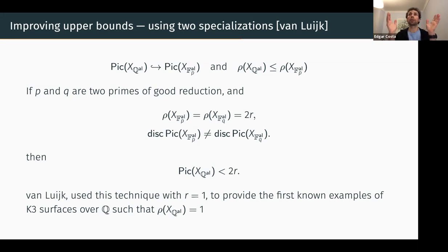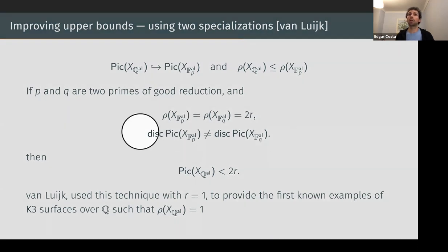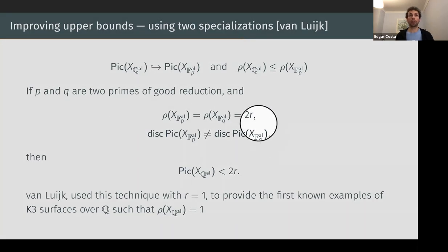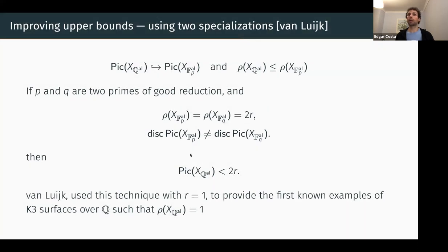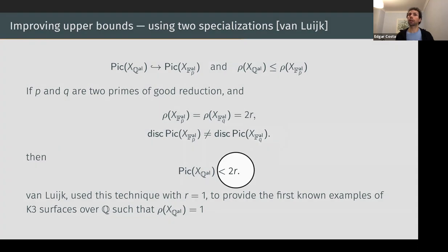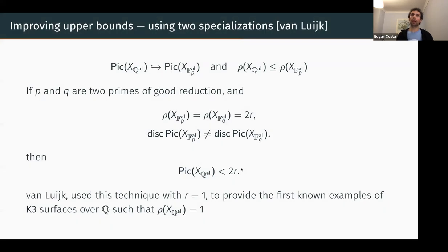The first ad hoc method, discovered maybe 13 years ago, is the idea of using two primes. You have your K3 surface over Q-bar and you specialize at two primes p and q such that the Picard number over F_p-bar and F_q-bar is the same value R. By some methods relying on the Artin-Tate conjecture, you can show that the discriminants cannot be equal, because the Artin-Tate conjecture tells you the discriminant up to squares. Using these two lovely equations, you can conclude that the Picard rank over Q-bar cannot be rank R. Van Luijk used these methods to prove the first known explicit example over Q where the geometric Picard rank is one.